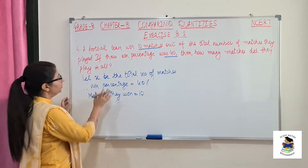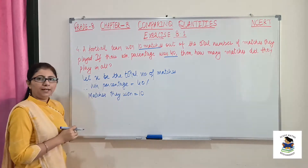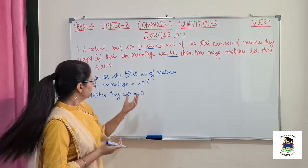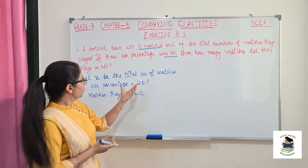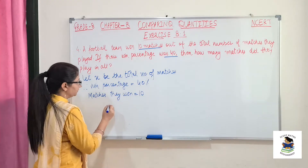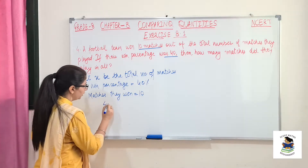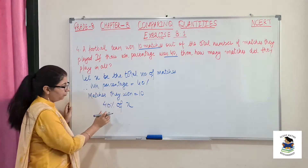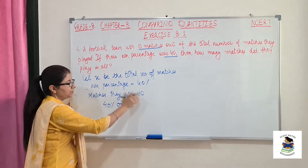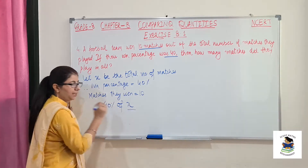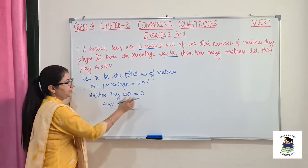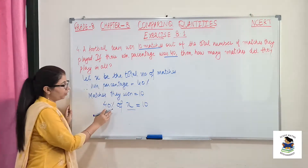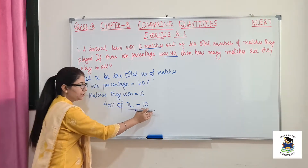The percentage that they have won — out of the total matches they have won 10 matches. So 40% of x, that is out of the total matches they have played, 40% is equal to 10. So 40% of x is equal to 10.